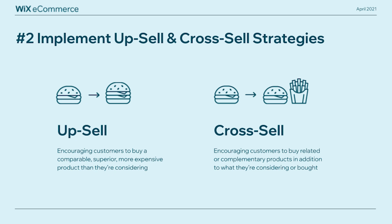Once you've done that, you're ready to start implementing sales strategies. The first two are upsell and cross-sell. They both aim to get customers to spend more but work differently. Upsell is when you encourage customers to buy a comparable, superior, more expensive product than the one they're considering — like convincing someone buying a burger to take the deluxe version that costs 20% more. In a cross-sell, you encourage customers to buy related or complementary products in addition to what they're already buying — like convincing them to add a side of fries along with the burger.